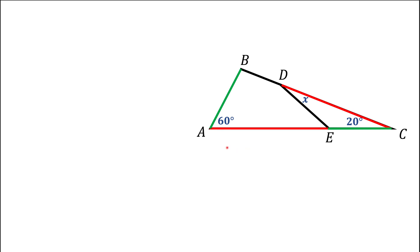Here we have a triangle ABC. We know two angles of this triangle: 60 and 20 degrees. We also know some relationships between the sides or part of the sides. There is a segment DE that connects side BC and side AC. We know that AB is the same length as EC, and the side CD is the same length as AE. Whatever is green is the same length; whatever is red is the same length. We are asked to find angle X, which is CDE.